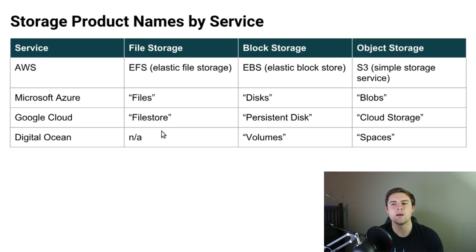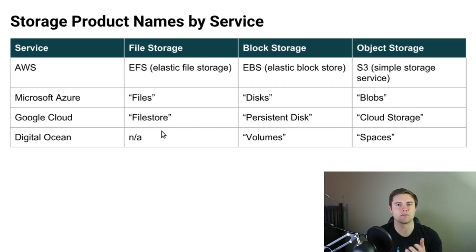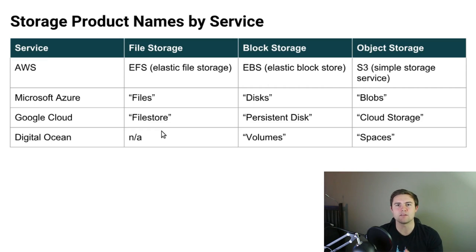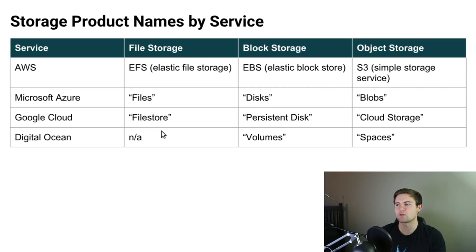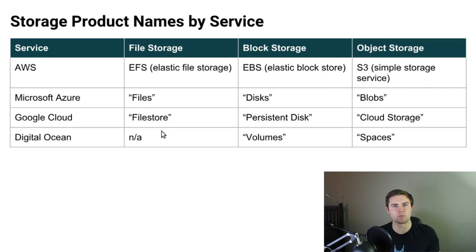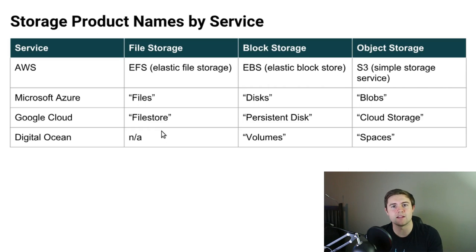The last thing before wrapping up is to cover the storage product names that different cloud services use. Marketing departments do their best to make their products sound unique, but in the end all these products are the same regardless of what they're called. For example, Amazon's S3 — Simple Storage Service — is just object storage. You can pause the video and look through the comparison chart. If you liked this video, please hit subscribe and give it a like — see you next time.